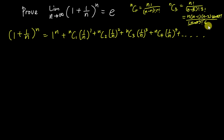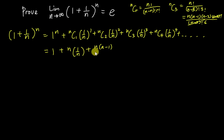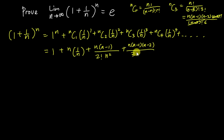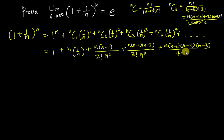Applying this: the nC1 term gives just n, so multiplied by (1/n) we get 1. The nC2 term gives n(n−1) over 2!, multiplied by (1/n²). The nC3 term gives n(n−1)(n−2) over 3!, multiplied by (1/n³), giving n³ in the denominator. The nC4 term continues: n(n−1)(n−2)(n−3) over 4!, multiplied by (1/n⁴), and so on.